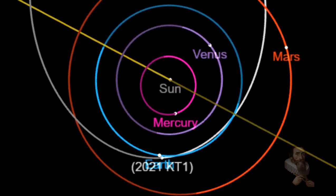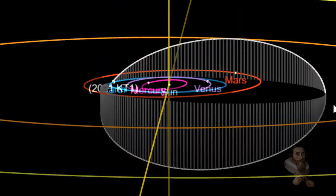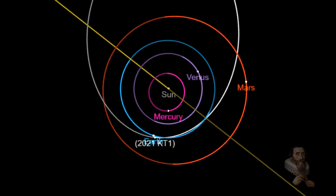Known as 2021 KT-1, the asteroid will make a close approach to the Earth on June 1st at 10:24 AM Eastern Daylight Time.